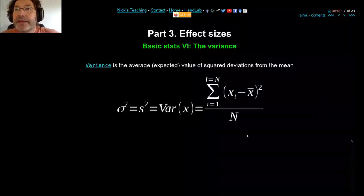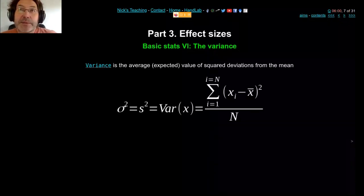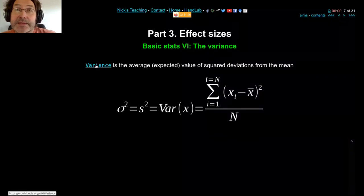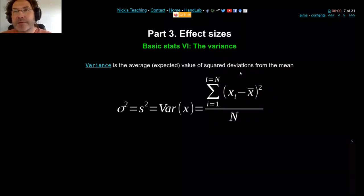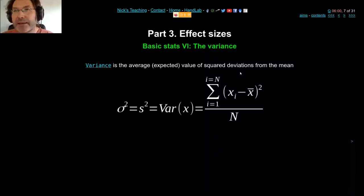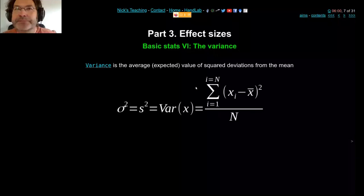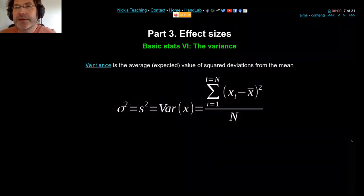If you take the sum of squared deviations and divide by N, you get the variance — the average expected value of all squared deviations from the mean. The Greek letter for variance is lowercase sigma squared; the Roman one is S squared. So we use S for standard deviation and S squared for variance.